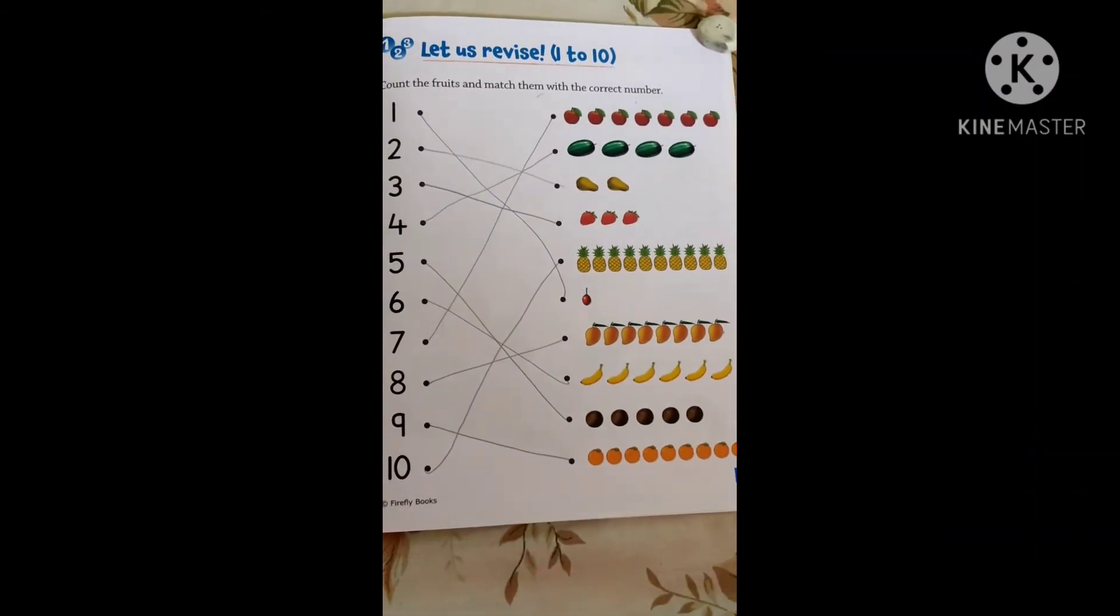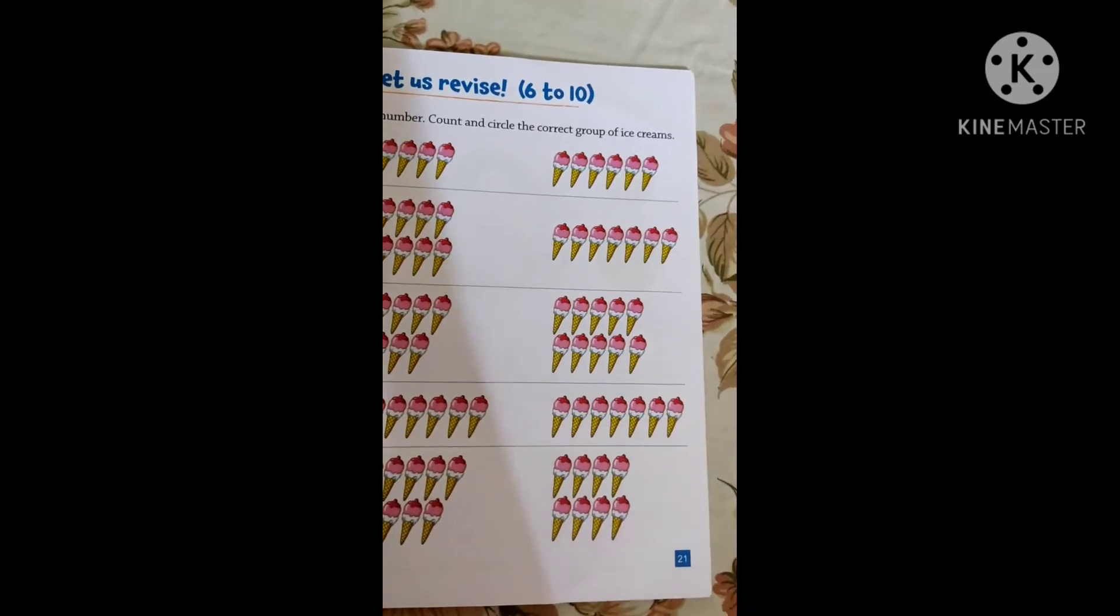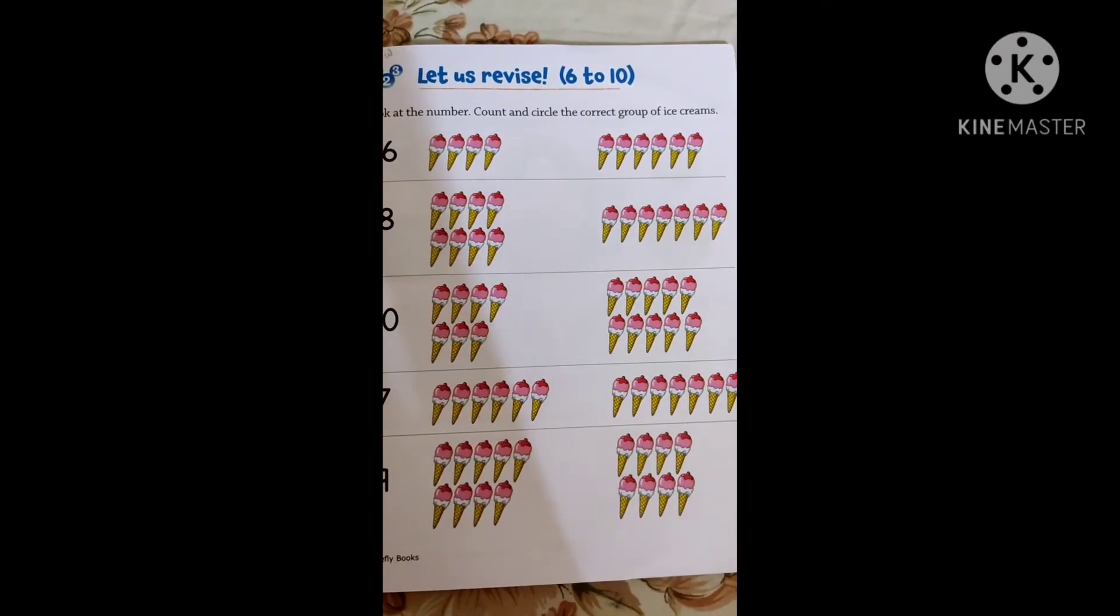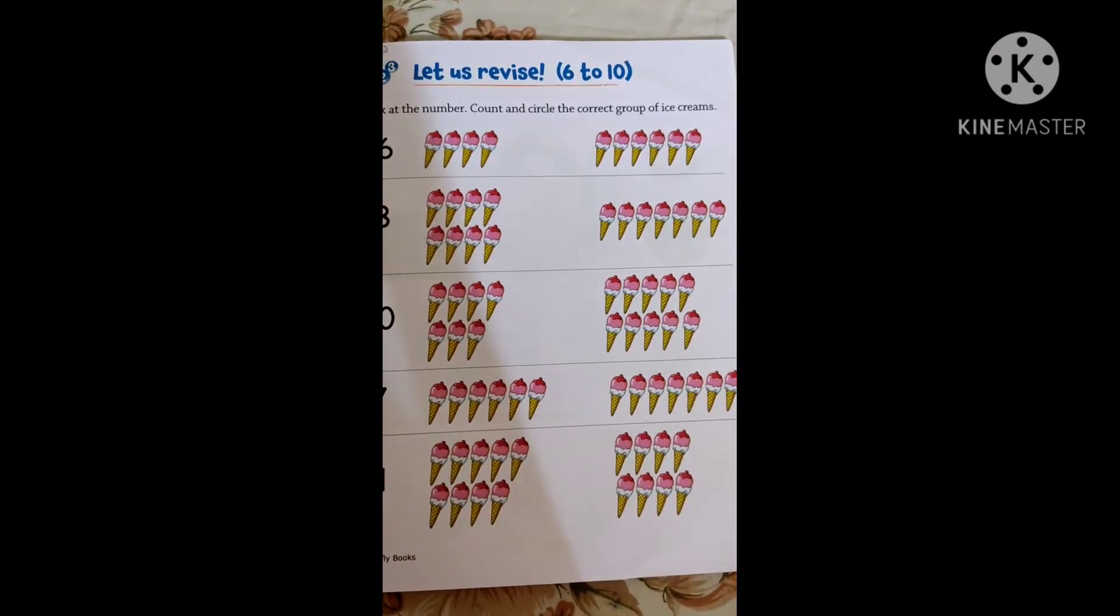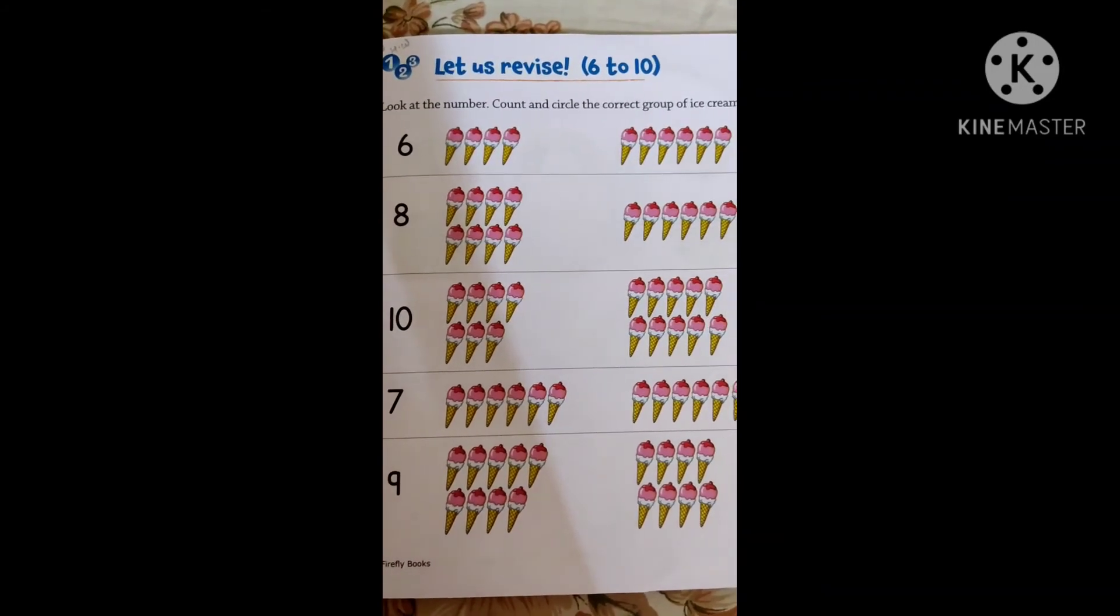So here our matching is also done. Yay! Now take out your children, open your mathematics practice book, page number 21. Let us revise. This is your homework page. You have to count the objects and then you have to circle the number given to you. So this you have to do as your homework.